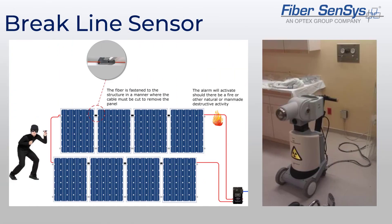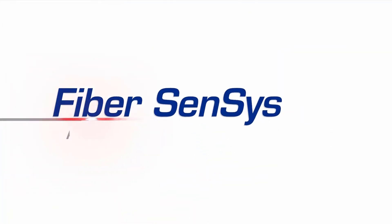Some sites may not be looking for perimeter or PDS protection but still have other assets to protect. One such instance involves the application of the cable break sensor, which could be used to detect natural or man-made destructive activity. This is shown in the image on the left, which has the fiber sensor connected to a chain of solar panels, or in the image to the right, which has a radiological machine. In these applications, if the cable is broken or disconnected, an alarm is generated. This concludes Chapter 1.